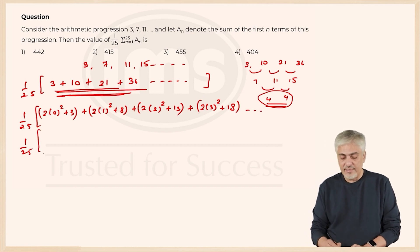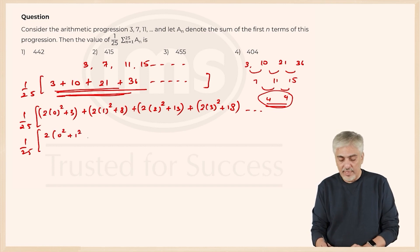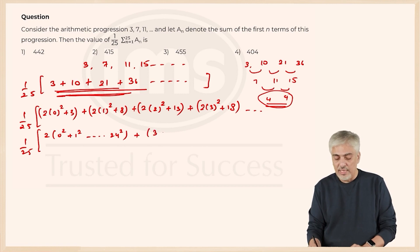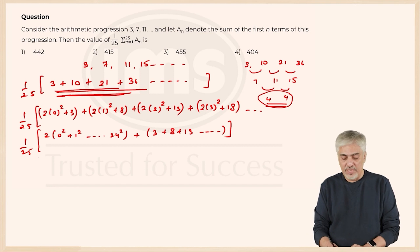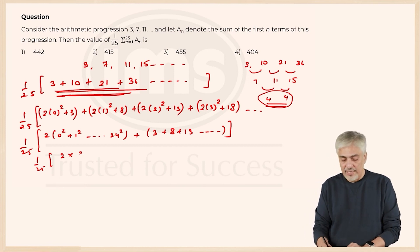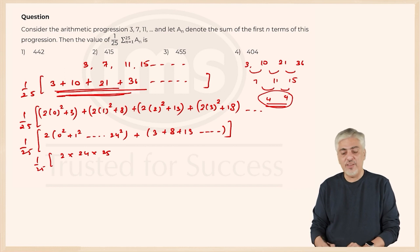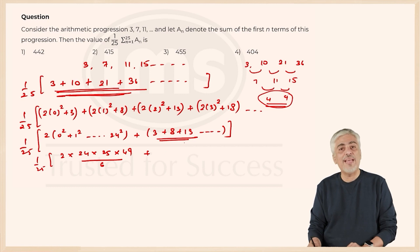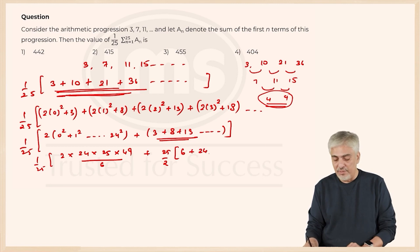So (1/25) remains as it is. We have 2 × (0² + 1² + ... + 24²) plus (3 + 8 + 13 + ... up to 25 terms). The first part is (1/25) × 2 × n(n+1)(2n+1)/6 with n = 24: that's 2 × 24 × 25 × 49/6. The second part is a regular AP sum: (25/2) × (2×3 + 24×5).